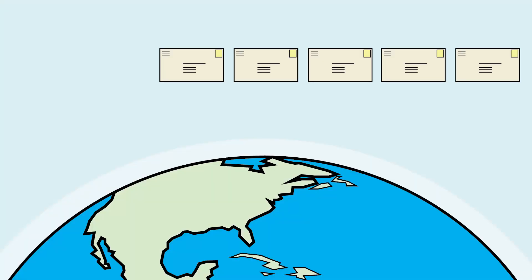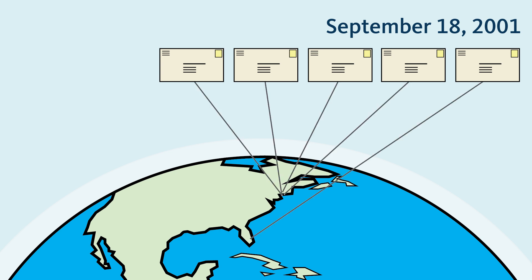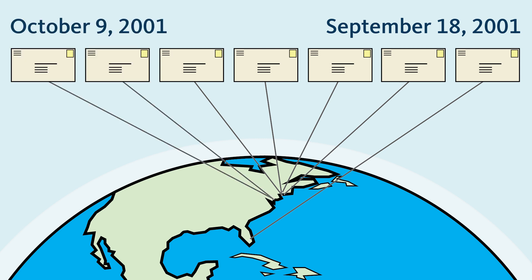As part of the attack, five letters containing anthrax spores were mailed on September 18, 2001 to ABC News, CBS News, NBC News, the New York Post, and the National Enquirer. Two more letters laced with anthrax were mailed to U.S. senators on October 9, 2001. The attacks resulted in five deaths and 17 infections.